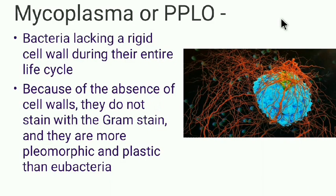Mycoplasma, or PPLO, are essentially bacteria lacking a rigid cell wall during their entire life cycle, and they are much smaller than bacteria. The first organisms of this type were associated with pleuropneumonia of cattle and were originally called the pleuropneumonia organisms. Since that time, a number of organisms with similar morphological characteristics and cultural properties have been isolated.